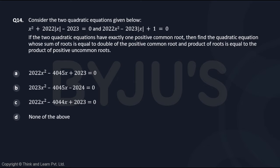Moving on to question number 14, it is a scary complicated-looking quadratic equation question with modulus involved. Let us go ahead and try to solve it. They are saying that two quadratic equations have exactly one positive common root. Find the quadratic equation whose sum of the roots equals double the positive common root, and the product of roots equals the product of the positive uncommon root.